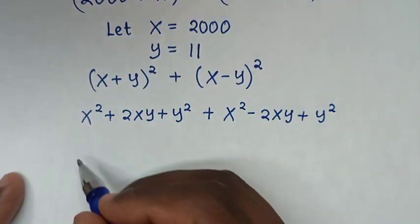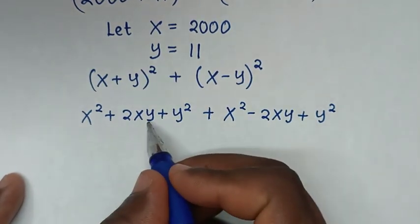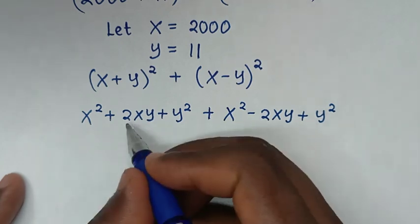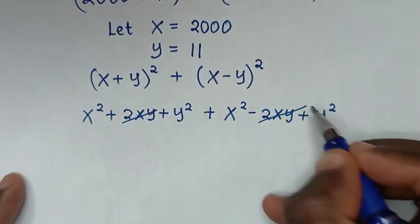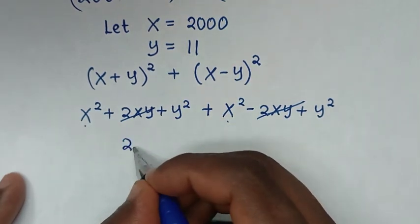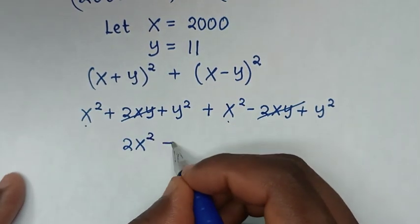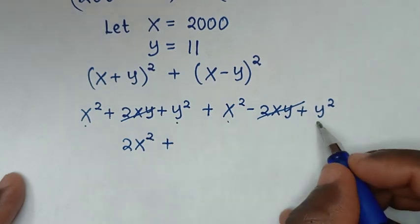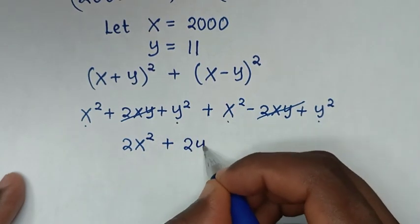In the next step, 2xy minus 2xy equals 0, so these cancel. We get x² plus x², which is 2x², then plus y² plus y², which is 2y².